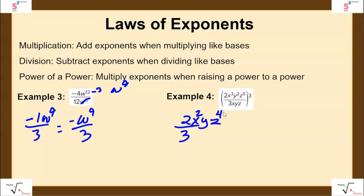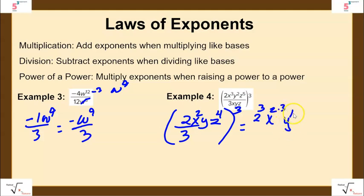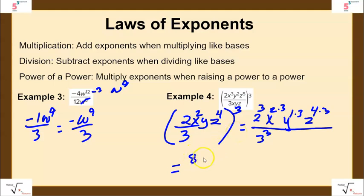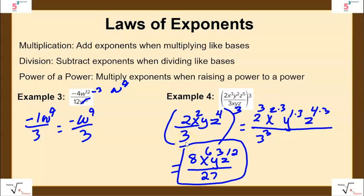Once I simplify inside the parentheses, I raise everything to the 3rd power. That means 2 cubed, then x squared times 3 gives x to the 6th, y to the 1st times 3 gives y to the 3rd, and z to the 4th times 3 gives z to the 12th. In the denominator, 3 cubed is 27. So the final answer is 8x to the 6th y to the 3rd z to the 12th, all over 27.